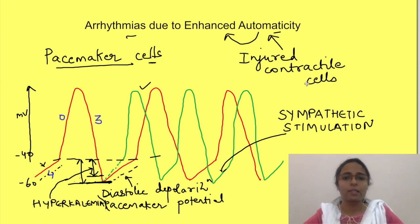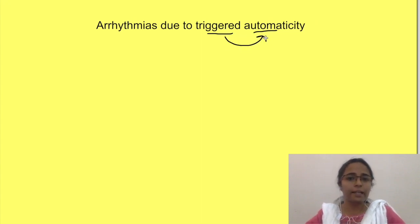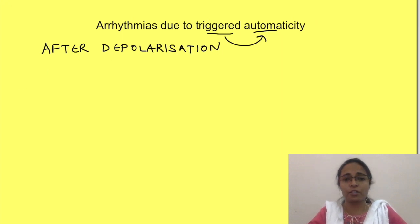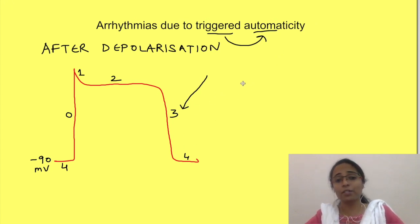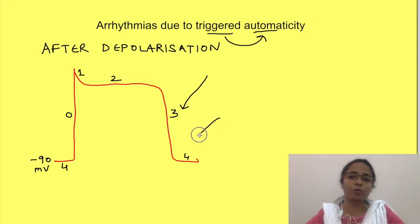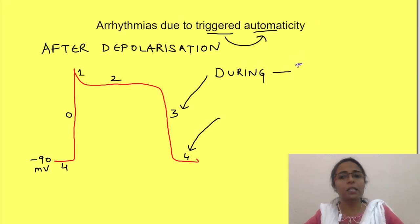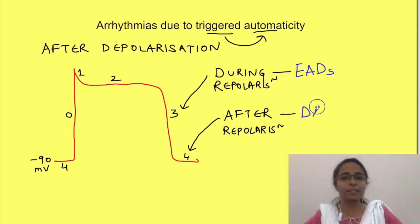Let's talk about the second cause now. The second cause of arrhythmias is triggered automaticity — something is triggering the automaticity. These kinds of arrhythmias occur due to something known as after-depolarizations. After-depolarizations are depolarizations which occur during or immediately after the repolarization phase. Here is a diagram showing action potential of contractile cells, where phase 3 is the phase of repolarization. So after-depolarizations can occur either in phase 3 or phase 4 of action potential, giving two types: those occurring during phase 3 are known as early after-depolarizations (EADs), and those occurring in phase 4 are known as delayed after-depolarizations (DADs).